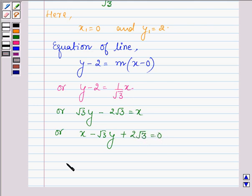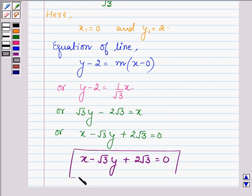Thus, equation of a line satisfying the given condition is given by x minus root 3y plus 2 root 3 is equal to 0. So this is our answer. And this completes the session. Take care and have a good day.